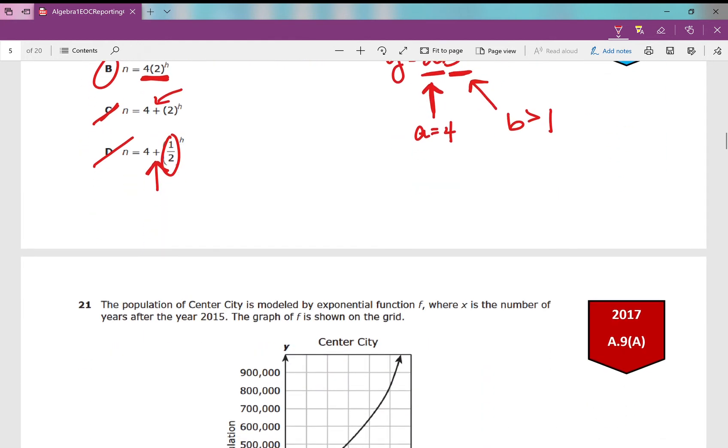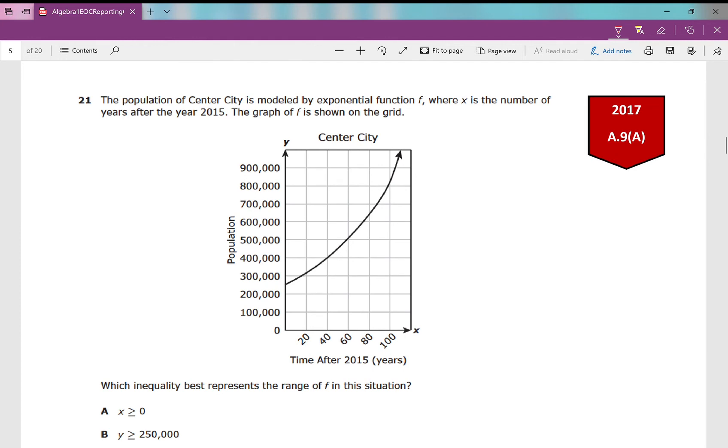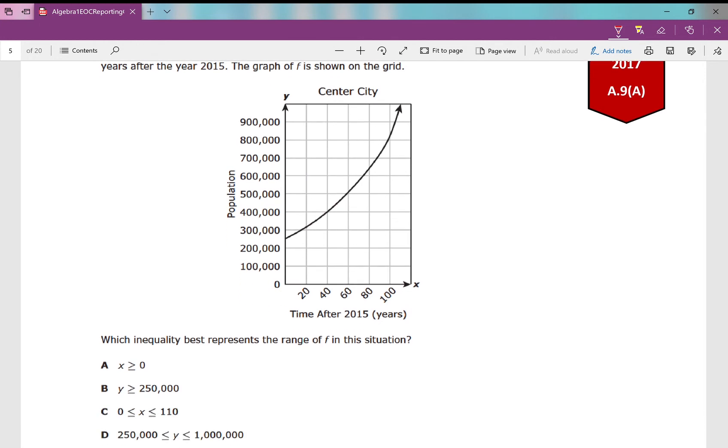Number 21: The population of Center City is modeled by exponential function f, where x is the number of years after the year 2015. The graph of f is shown on the grid. Which inequality best represents the range of f in this situation? Range—that's our y values. Remember, y values. Anytime we see range, underline it, write y values above it, and then reread it. Which inequality best represents the y values of f in this situation?